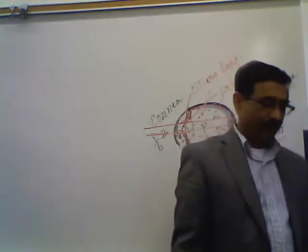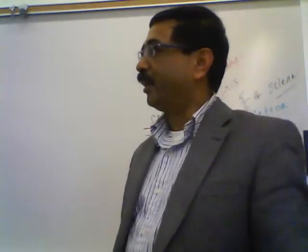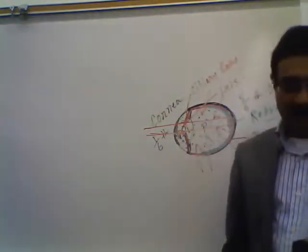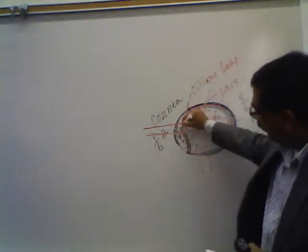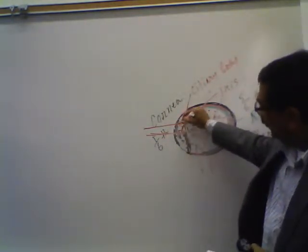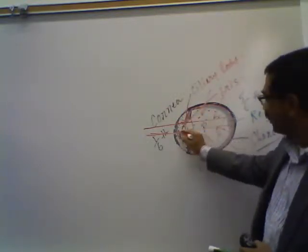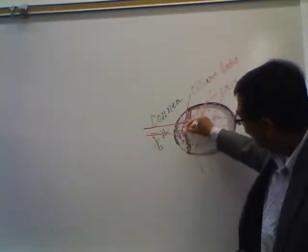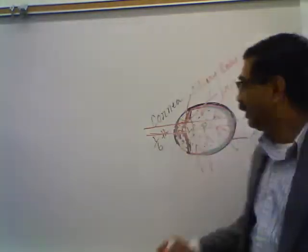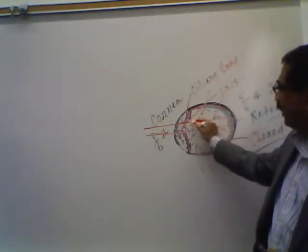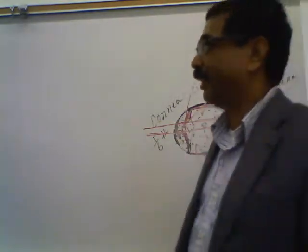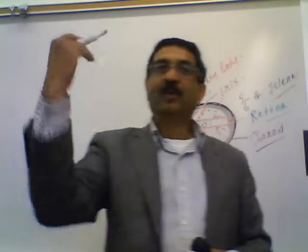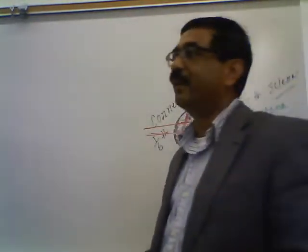When light enters the eyeball and travels to the retina, it must pass through several transparent structures in sequence: first the cornea, then the aqueous humor, then through the pupil — the opening in the iris — then through the lens, then through the vitreous humor, and finally it reaches the retina. All those structures must be highly transparent so that light can pass through without obstruction.